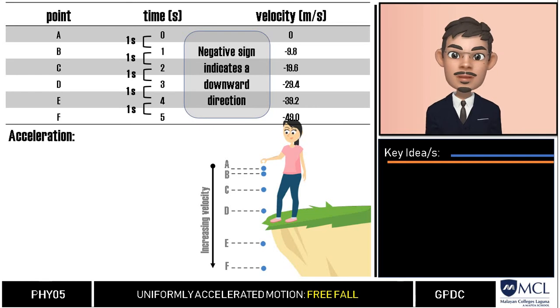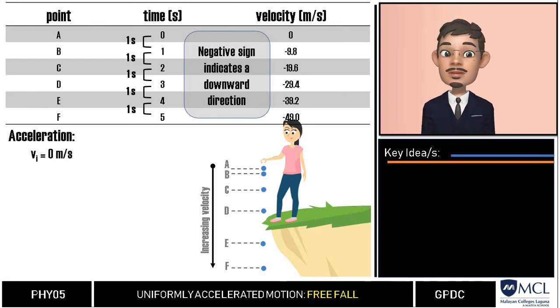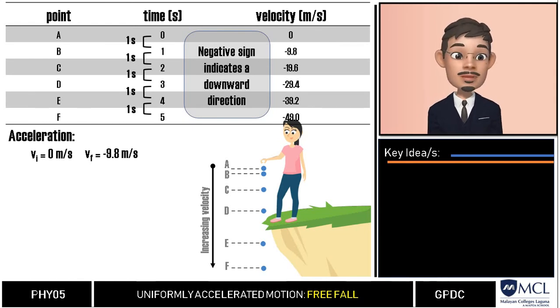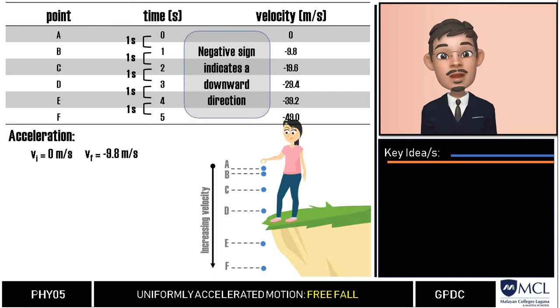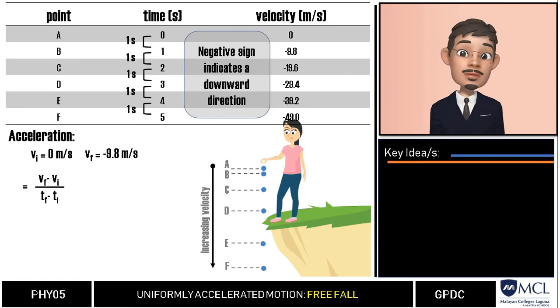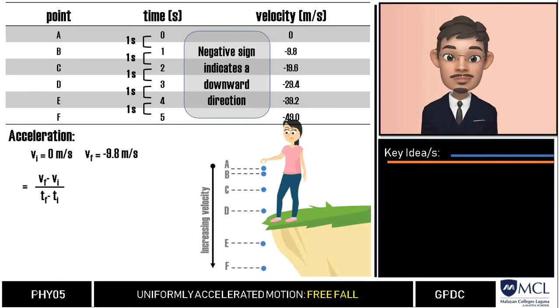Let us try to see whether the acceleration remains constant. Let us have this point A to point B. At point A the rock's velocity is at rest at 0 meters per second, then at point B it increased to 9.8 meters per second. When we apply this in our formula, a equals final velocity minus initial velocity over time, then our acceleration is 9.8 meters per second squared.